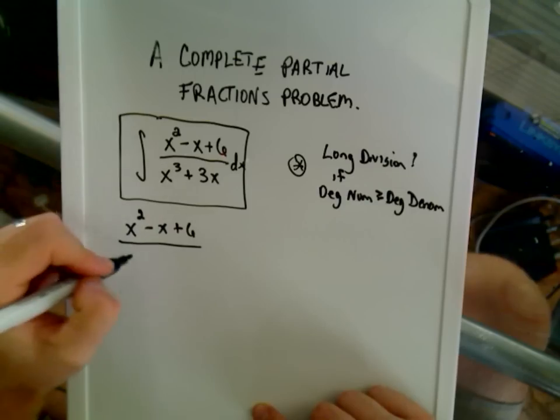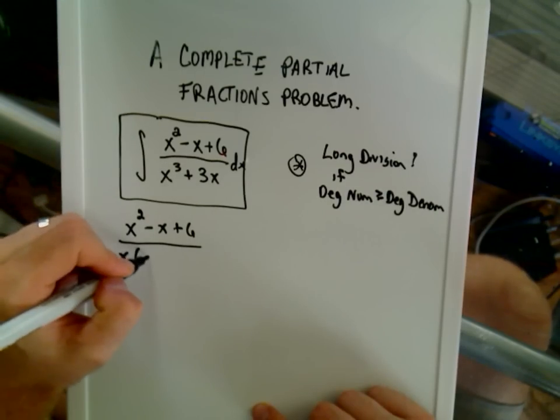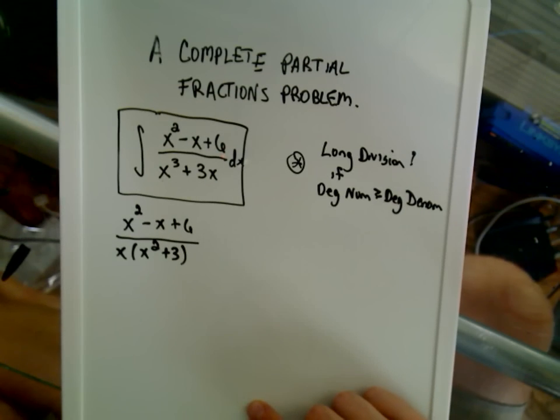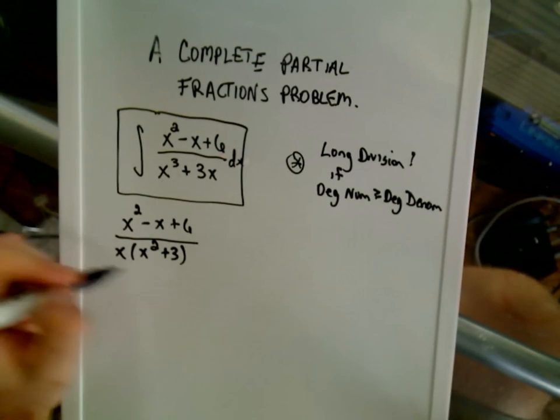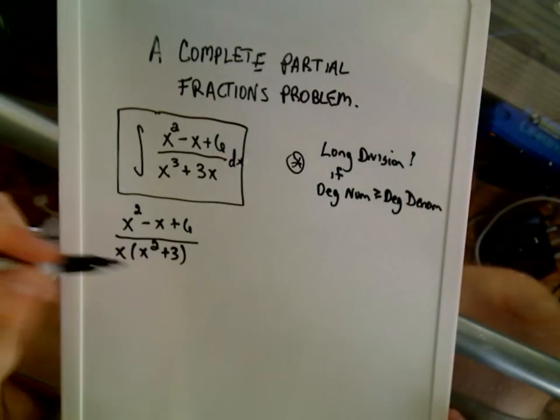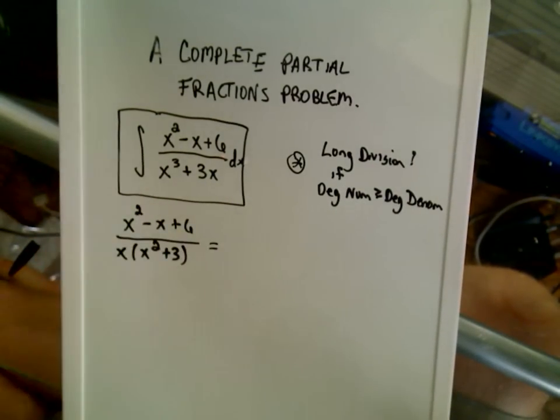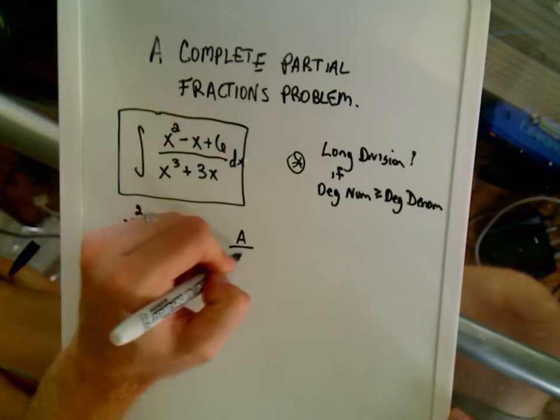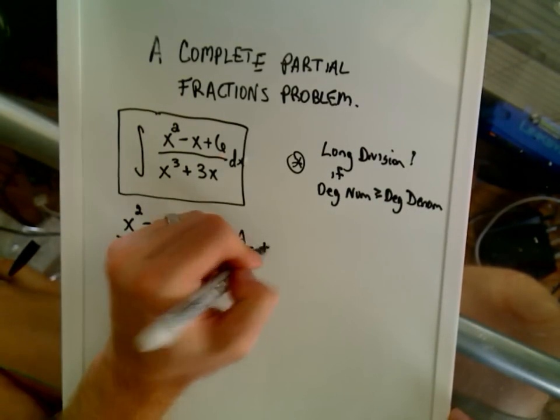Okay, the first thing I'm going to do is factor out an x in the denominator so that I'm left with x squared plus 3. And then remember, you should try to factor the denominator as much as possible. x squared plus 3 won't factor any further, so my linear term of x, I put an A over x for that when I do my partial fraction decomposition.